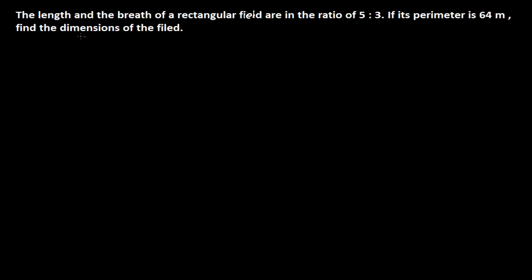Hello, welcome once again. Here is another problem on perimeter. The length and the breadth of a rectangular field are in the ratio of 5:3. If its perimeter is 64 meters, find the dimensions of the field. Now, how do we find this?